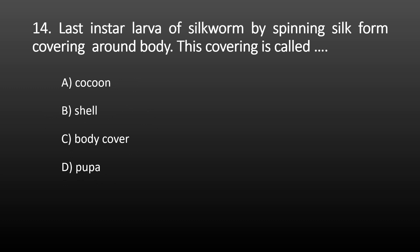Next MCQ: the last instar larvae of silkworm, by spinning silk, forms a covering around its body. Each covering is called? Options are: cocoon, shell, body cover, and pupa. The silkworm pupa is covered by a silk thread, and this silk thread structure is called the cocoon. The correct option is cocoon.